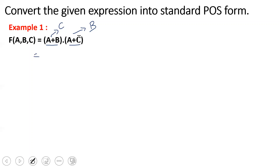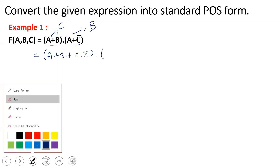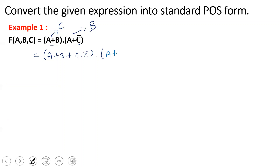Step 2: for the first max term A+B, the missing variable is C, so we add C·C-bar. For the second max term A+C-bar, the missing variable is B, so we add B·B-bar. The expression becomes: (A + B + C·C-bar)·(A + C-bar + B·B-bar).